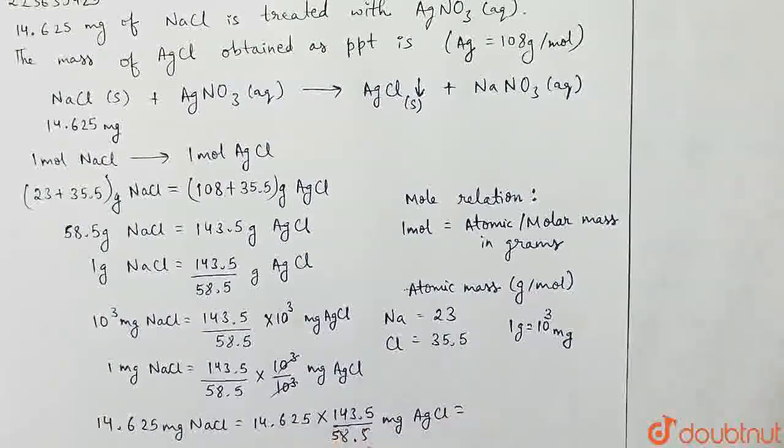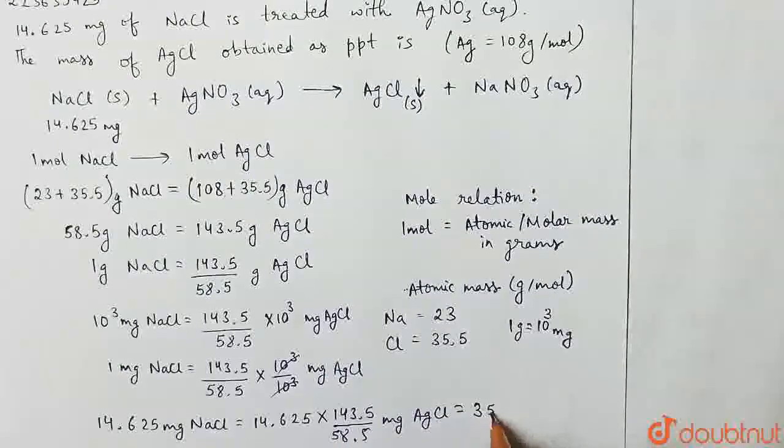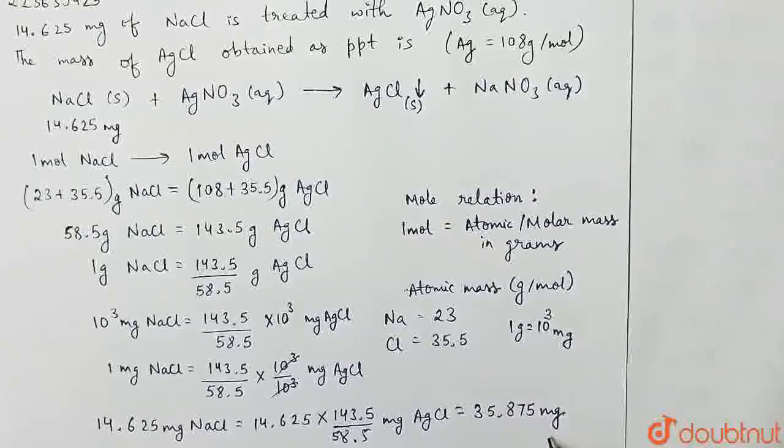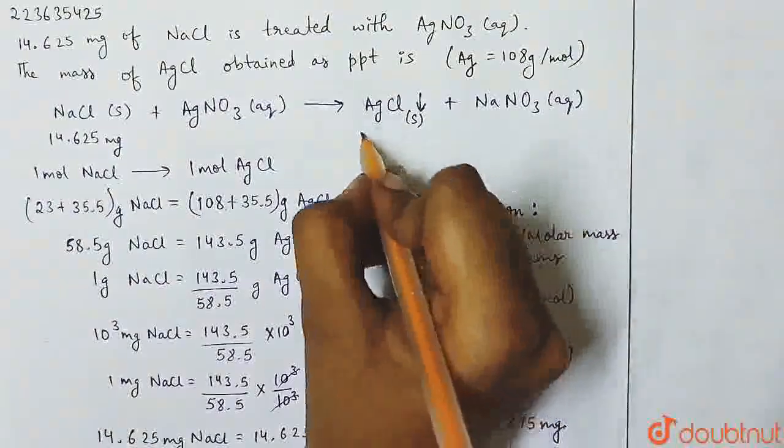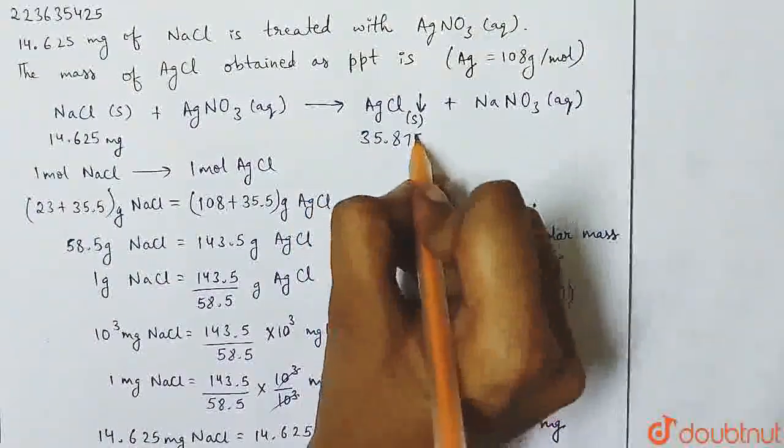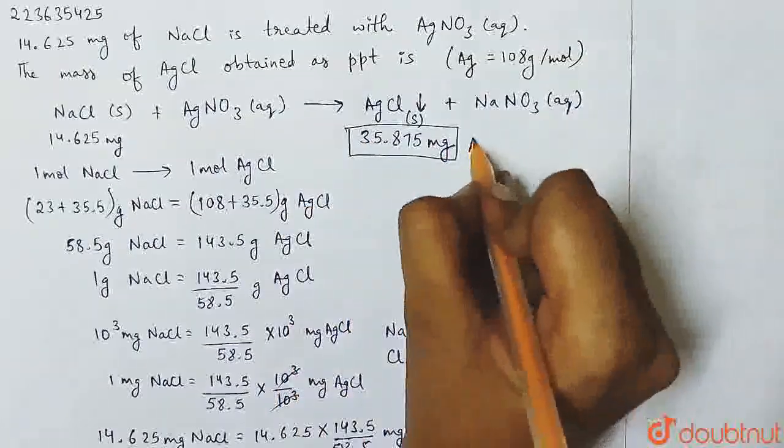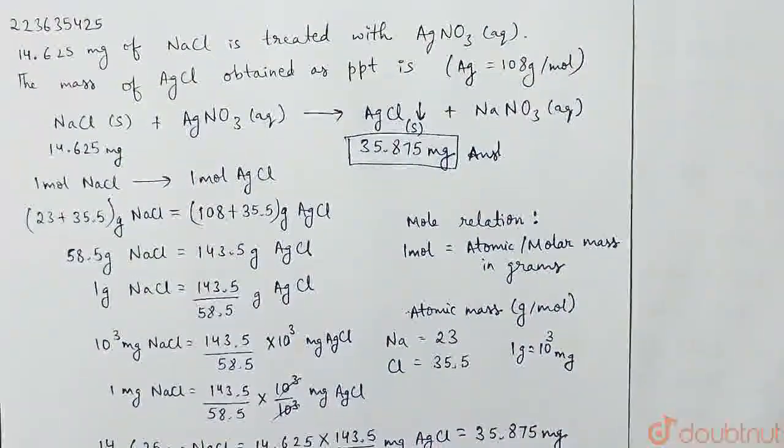We will calculate, so we will get 35.875 mg. Therefore, our answer is 35.875 mg of AgCl is obtained as precipitate. Thank you.